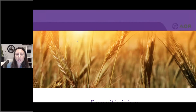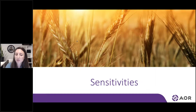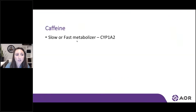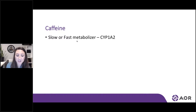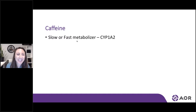A great example is looking at sensitivities to specific foods, particularly when we look at caffeine. One man's poison can be another person's superfood. When it comes to caffeine, based on genetic variations, someone can either be a slow metabolizer or fast metabolizer. There's about a 50% difference in the population, so it's likely that one person in two has the fast version and the other has the slow version.